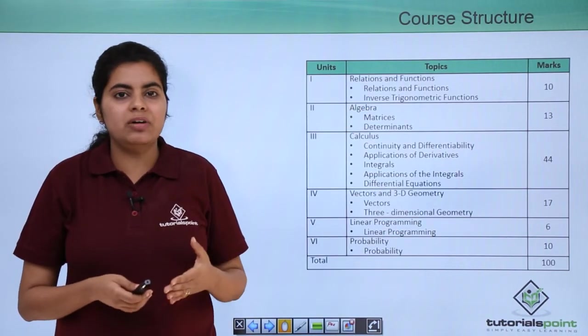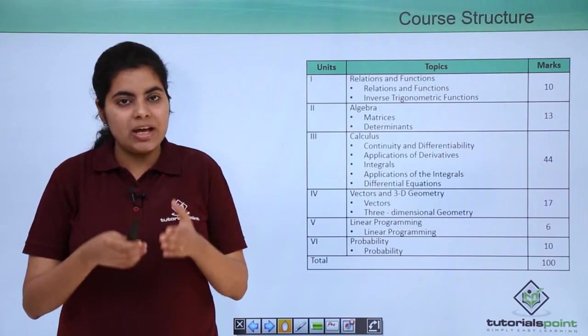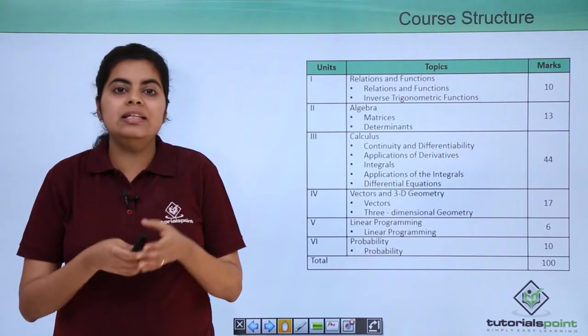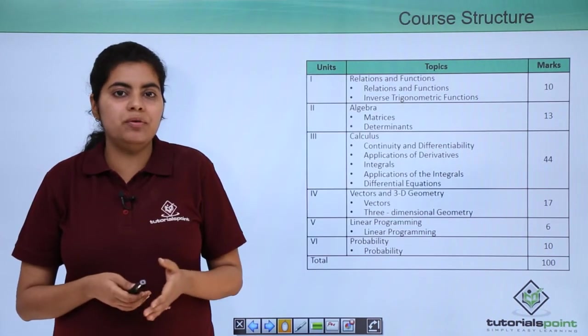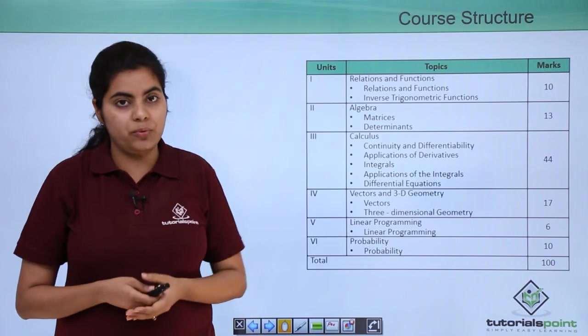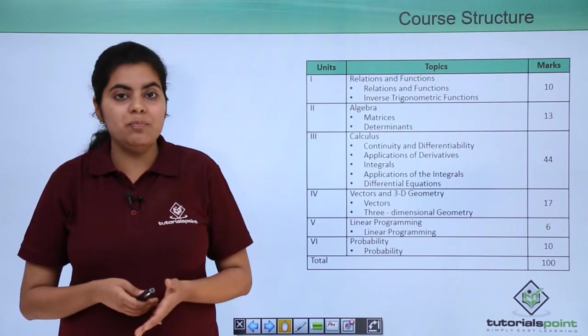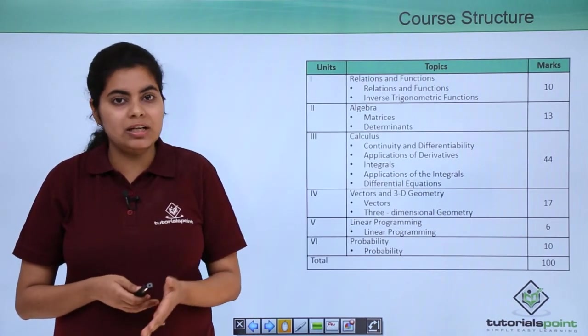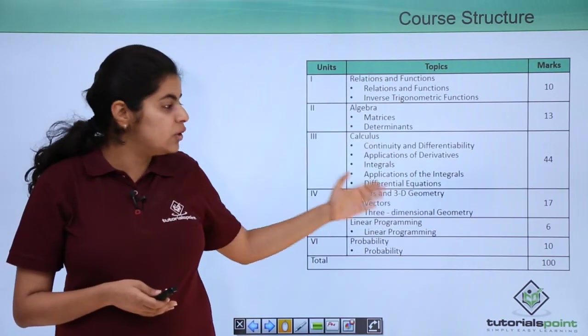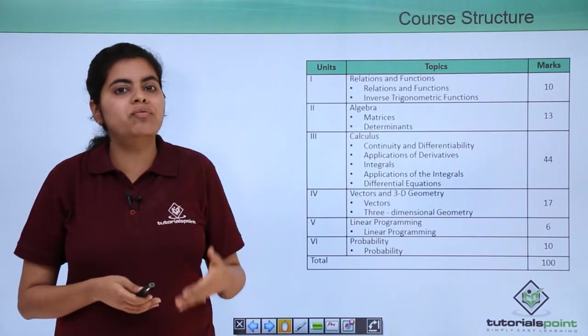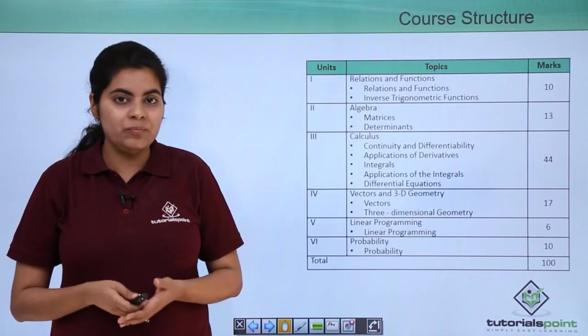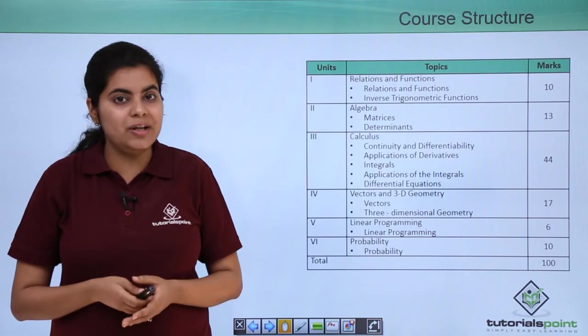So after we have covered all these things I just need to mention two three things in particular again that the easiest unit that you would find would be according to me algebra and linear programming. The most important one although you find difficult you have to cover it full is your calculus. And after you have covered all these three units you can go for vector 3d relation functions and probability. So the syllabus the brief introduction is done.